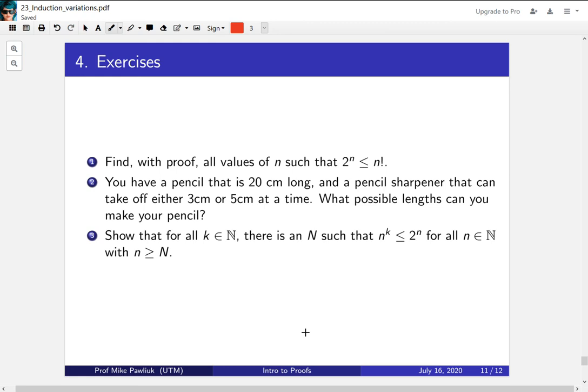And this is a variation on the n squared is less than or equal to 2^n example. But instead of n squared, we're looking at n cubed, n to the 4, n to the 5. So show that for all exponents k in the natural numbers, there is this starting index, this base case number n such that n^k is less than 2^n for all natural numbers that are bigger than that base.